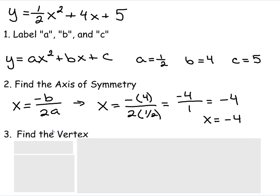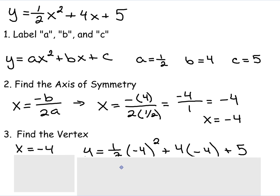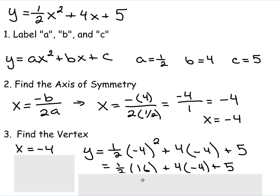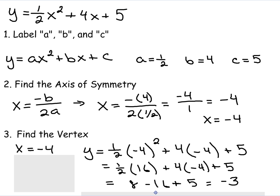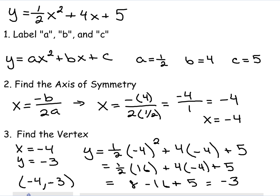The next piece of the puzzle is the vertex. To find the vertex, we use our axis of symmetry x equals negative 4 and plug it back into the original equation: y equals one-half times negative 4 squared plus 4 times negative 4 plus 5. Doing order of operations — parentheses first, then exponents — negative 4 squared is 16. Then one-half times 16 gives 8, minus 16 plus 5 equals negative 3. So y is negative 3, and the vertex is negative 4, negative 3.